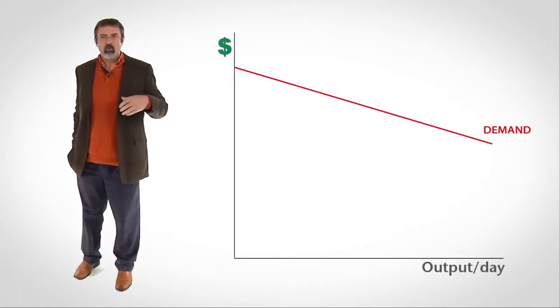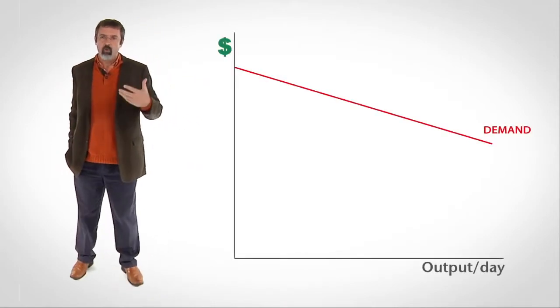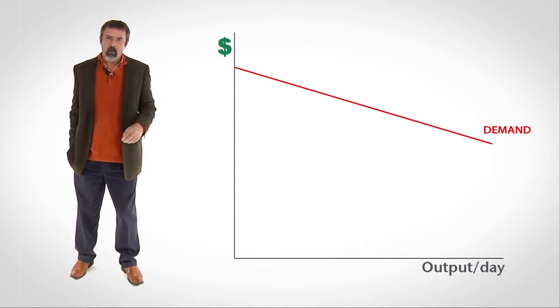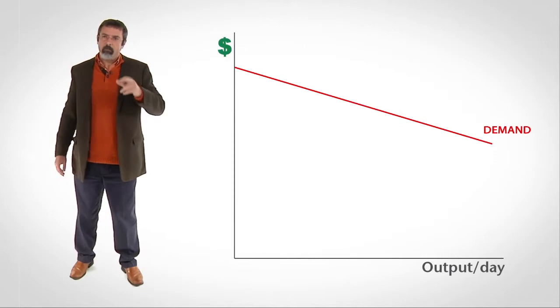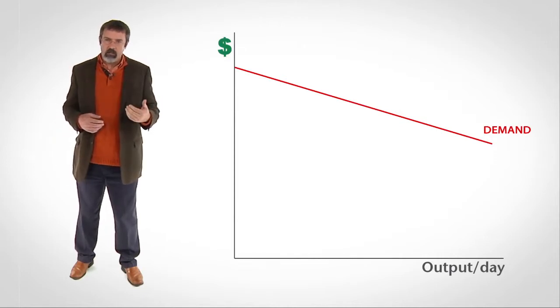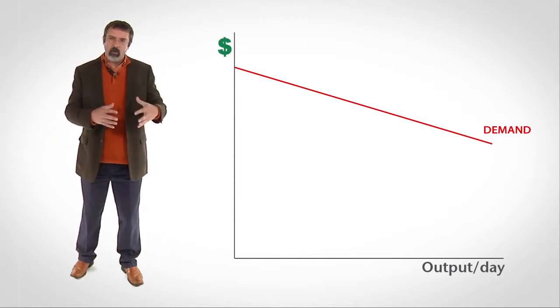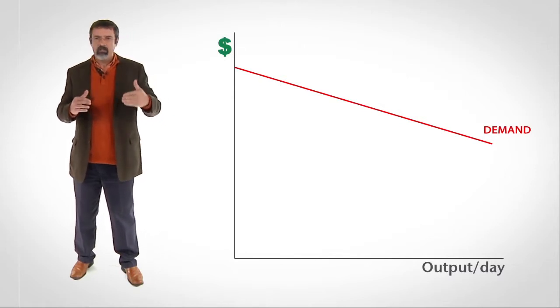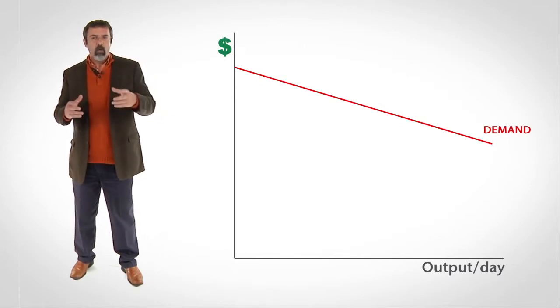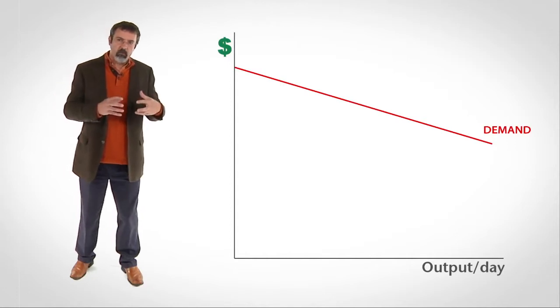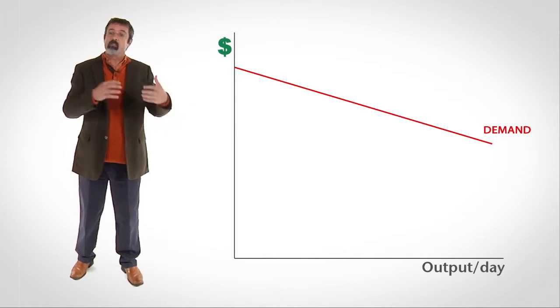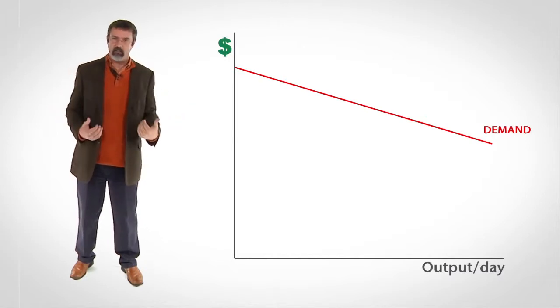Now recall that the slope of a firm's demand curve reflects the degree of control the firm has over the market price of its product. When the single oligopoly firm raised its price, the other oligopoly firms did nothing, so the market price rose but not by much. When the single oligopoly firm lowered its price, the other oligopoly firms lowered their prices also, so the market price dropped significantly.